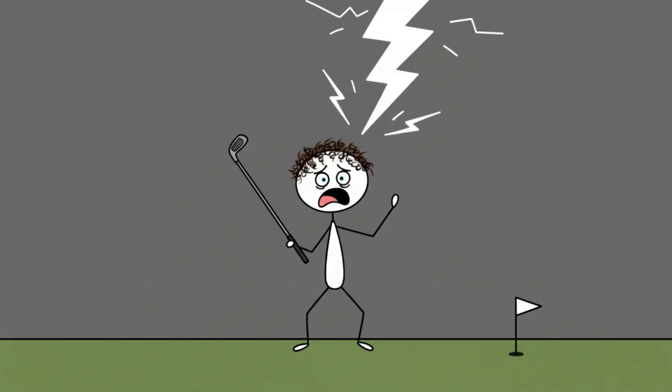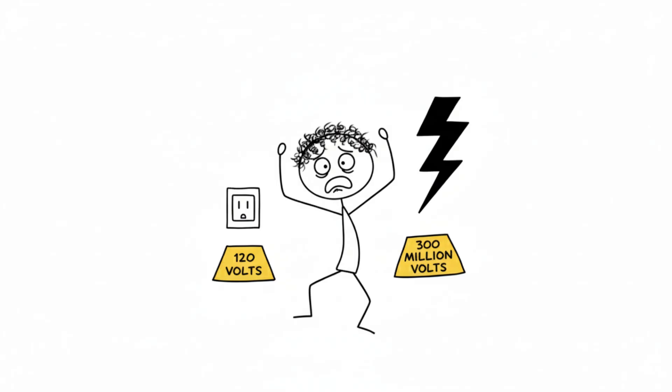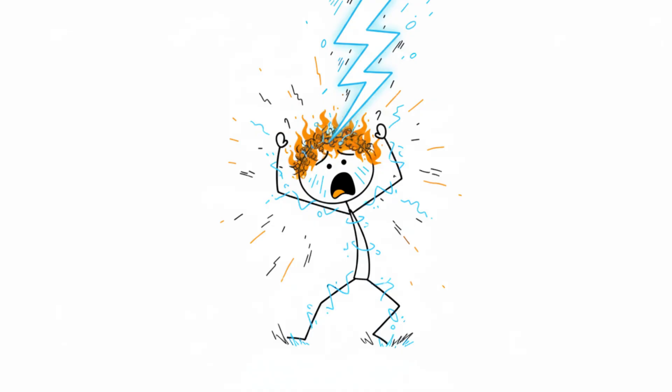8. Human Lightning Rod. Picture this: You're out on a golf course, holding a shiny metal club, and nature decides you'd look better flambéed. A lightning strike isn't just a zap, it's 300 million volts deciding your body is the shortest path to the ground. For reference, your home outlet only gives 120 volts. Congratulations, you're officially toastier than your toaster.